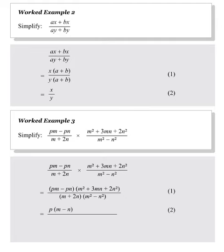In the numerator, we factorise PM minus PN by taking out a common factor. We factorise the trinomial in the usual way. In the denominator, we factorise M squared minus N squared as a difference of two squares.